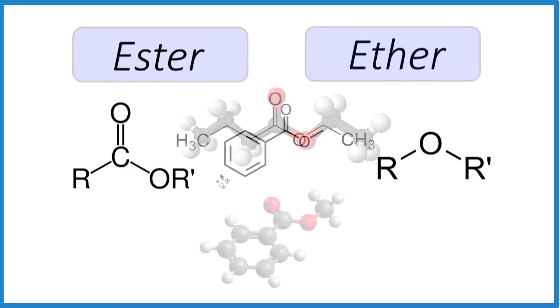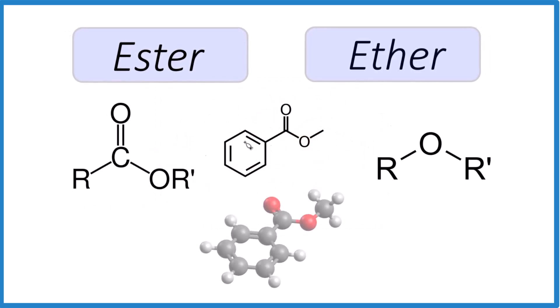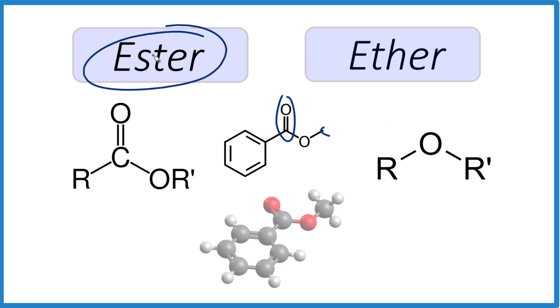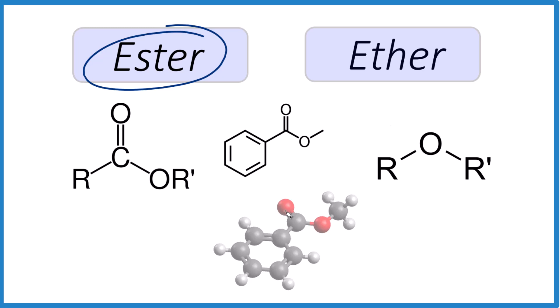One more — give this one a try. Again, that carbonyl group, the oxygen, then the carbon and the rest of the molecule — it's going to be an ester. Down here you see the double bonded oxygen, then a single bond with the rest of the molecule. In this case, just a methyl group.